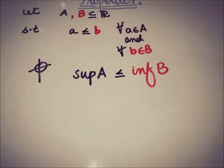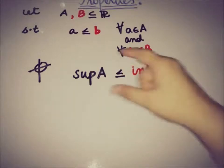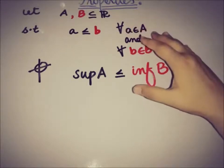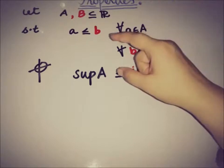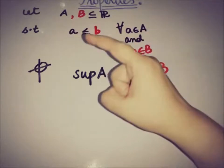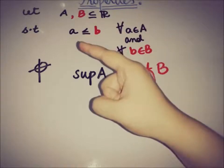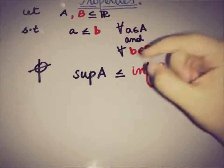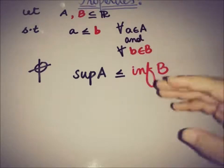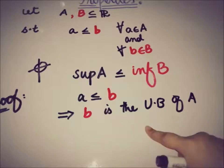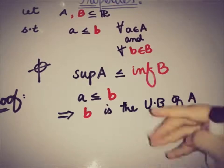Since a ≤ b is true for all a in A, this means that b is an upper bound of the set A, because every element of A is less than or equal to this element b. So b is an upper bound of A. Now, by the completeness property, if A has an upper bound then it must have a supremum. And the supremum of A is always less than or equal to any upper bound.